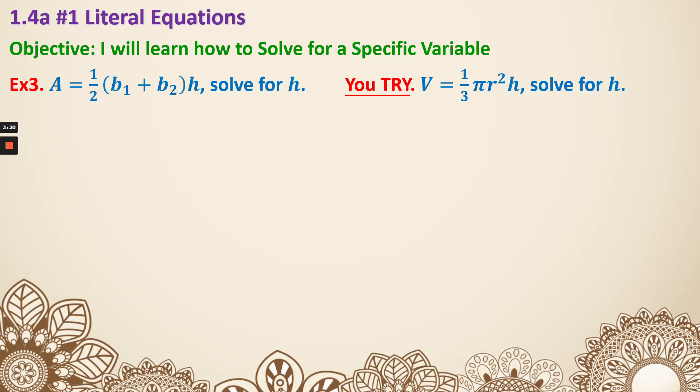Example 3. Solving for h. That means we need to get rid of everything else. So first thing popped to your mind would be, well, I see parentheses, so that means I should distribute. That would give you ½b₁ + ½b₂ times h outside. Well, but here's the problem. If we're solving for h, that means we need to get rid of this whole thing, and that does not look pretty.